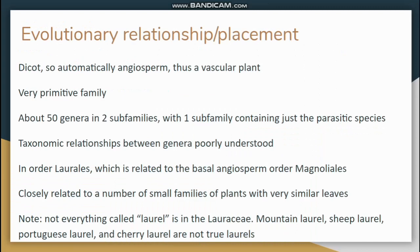This is a primitive family. It is a dicot — an angiosperm and vascular plant. There are 50 genera in two subfamilies; one subfamily just has that genus of parasitic vines, with only about seven species. We don't know a lot about how these 50 genera are related to one another, and there's no major consensus right now on the internal division of the Lauraceae. We know they're in the order Laurales, which is a very primitive group, and Magnoliales is the only extant order of angiosperm that is more primitive.